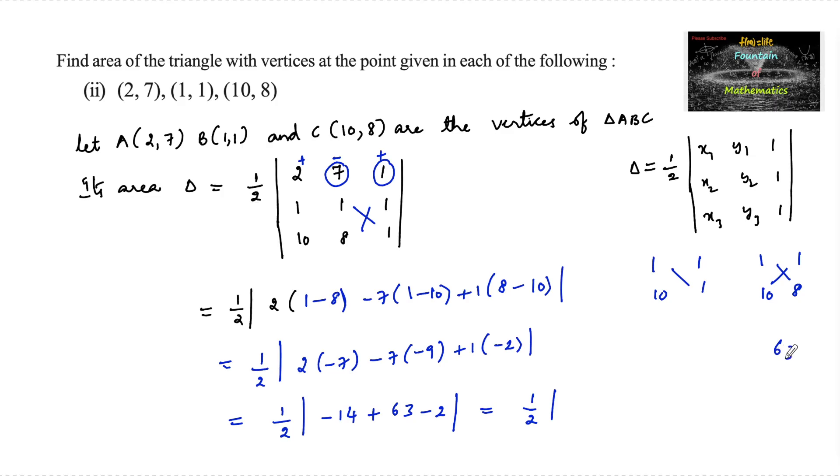63 minus 16 gives us 47, so we can take the positive value 47 upon 2 as the area of triangle.